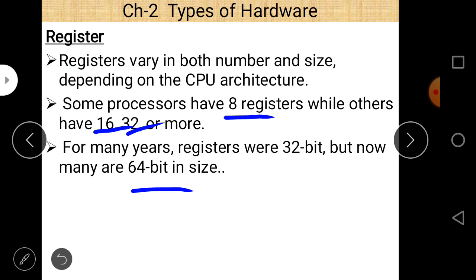The number of registers varies in all computer systems and computer architectures — the number of registers is not fixed. They vary depending on what architecture we follow. The size of the memory is 8-bit, 16-bit, 32-bit, or 64-bit. The most common sizes are 32-bit and 64-bit.